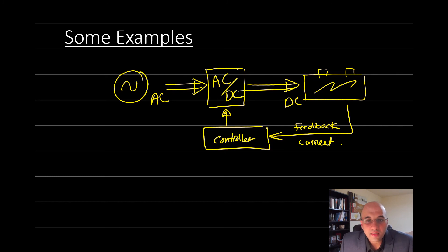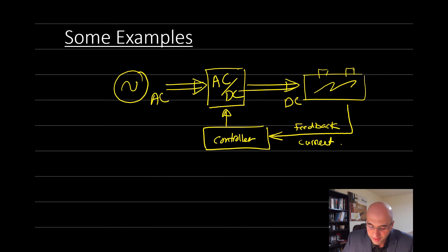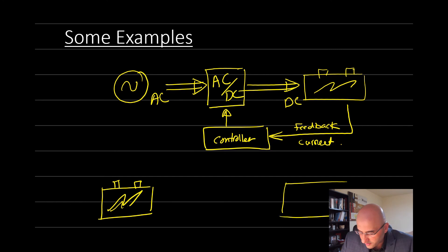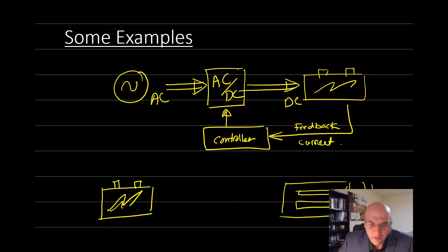For a second example, if the battery is the power source and we need to control the speed of an induction motor, then we definitely need an inverter — a DC to AC converter.